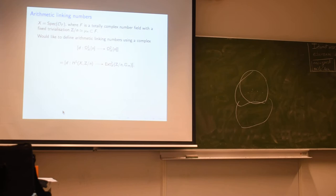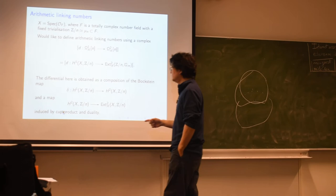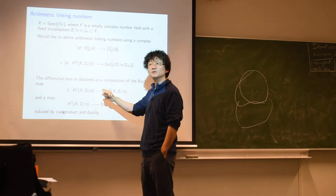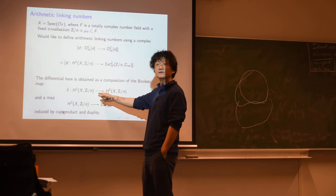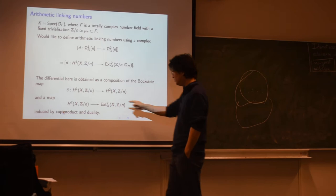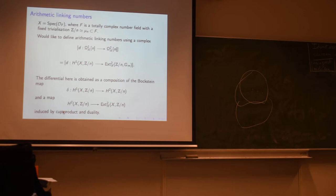So this is étale homology. The map D is defined by a composition of two things. One is a map delta—this is a Bockstein map coming from an exact sequence Z/n → Z/n² → Z/n—so it's just the Bockstein connecting homomorphism in homology. The next is a map from H2 to X2, induced by cup product and duality.